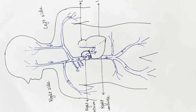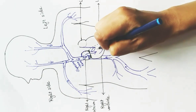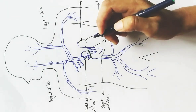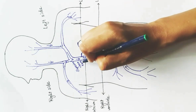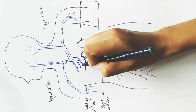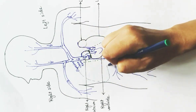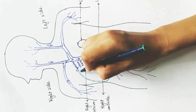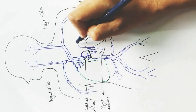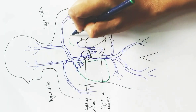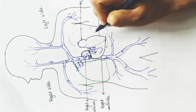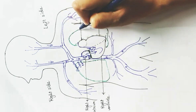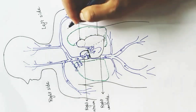From the right atrium, that carbon dioxide-rich blood reaches the right ventricle. The right ventricle then sends this carbon dioxide-rich blood to the lungs, so that the carbon dioxide can leave the body through the lungs.